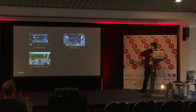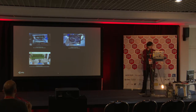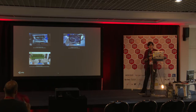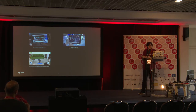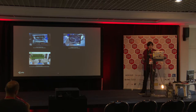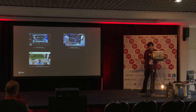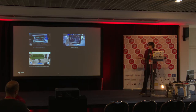IKEA lets you preview furniture in your apartment — all at one-to-one scale. Because we know the scale of the room, we can orientate and scale these sofas to look exactly how they would if you went out and bought them. So if you're an interior designer, rather than doing sketches, you could show your clients exactly what it's going to look like. You could repaint the walls, put art up — there's really no limit to what you can do.